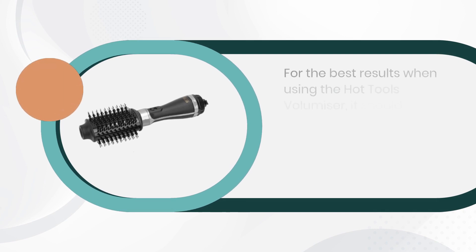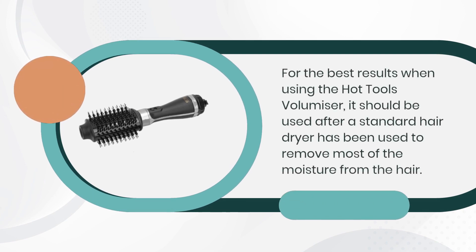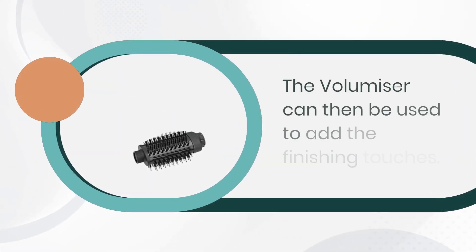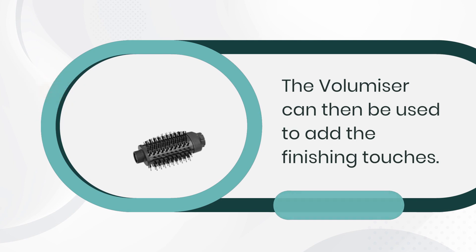For the best results when using the Hot Tools Volumizer, it should be used after a standard hair dryer has been used to remove most of the moisture from the hair. The volumizer can then be used to add the finishing touches.